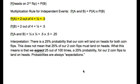The interpretation is that there is a 25% probability that our coin will land on heads for both coin flips. This does not mean that 25% of our two coin flips must land on heads. It means we expect 25 out of 100 times — a 25% probability — for our two coin flips to land on heads. Remember, probabilities are always expectations.